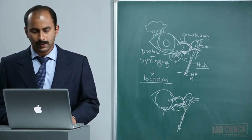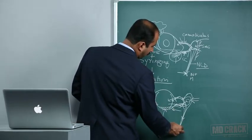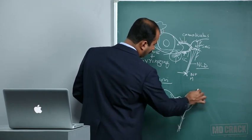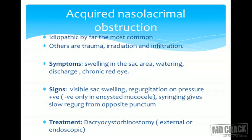Acquired nasolacrimal duct obstruction is the most common clinical presentation. The most common cause is idiopathic; others include trauma, irradiation, and infiltration by nasopharyngeal carcinomas. Symptoms include swelling in the region of the lacrimal sac due to proximal dilatation, high tear film and watering, and chronic discharging red eye from infected stagnant contents. Signs include visible sac swelling, regurgitation of mucus or mucopus on pressure on the sac, and slow regurgitation from the opposite punctum on syringing.